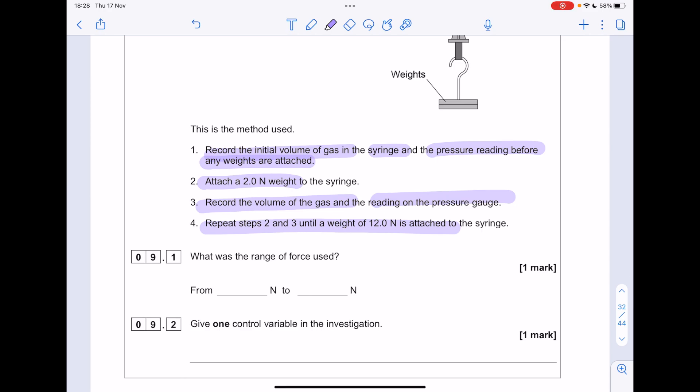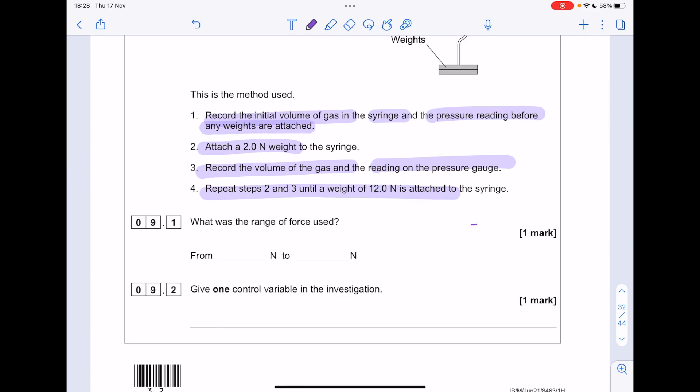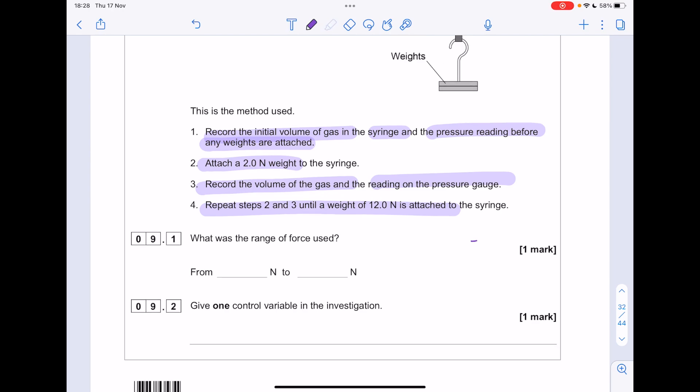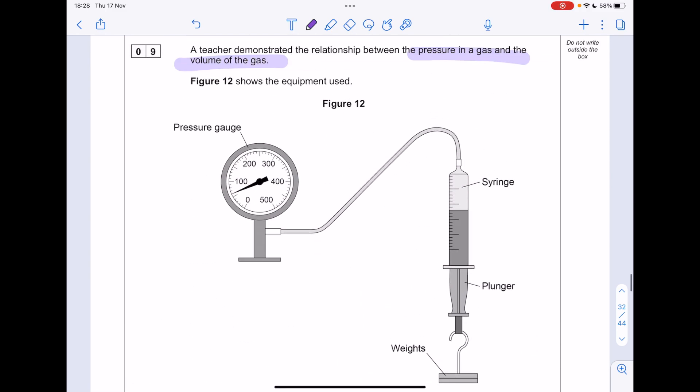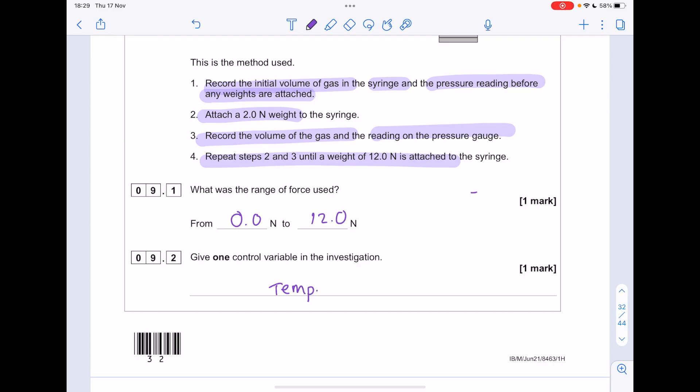What was the range of force used? Well, that's the difference between the highest and the lowest value. Notice here that they took a reading before any weights were attached. So that was 0N and they went all the way to 12. Give one control variable in the investigation. Definitely temperature because that's really going to affect the volume of a gas.